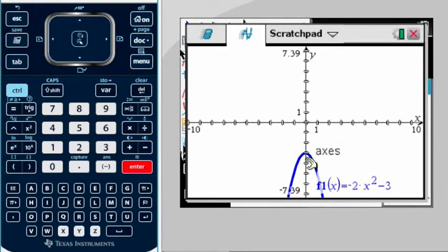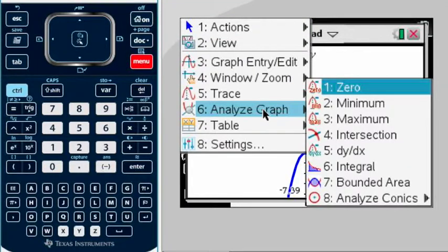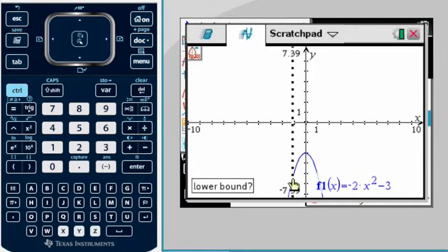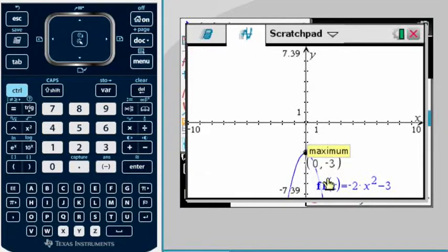So I can tell that this parabola has a maximum but no zero. So if I want to look for the maximum, no difference. I still go menu, Analyze Graph, maximum, draw my lower and upper bound. There it is.